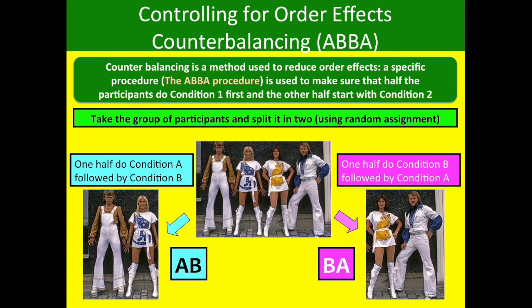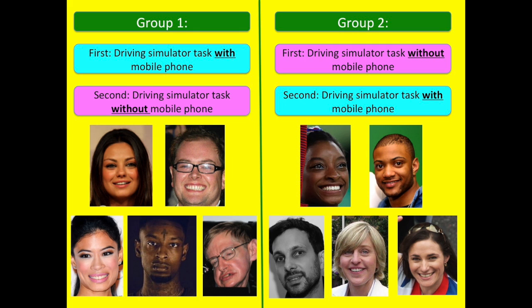The way to control order effects is through counterbalancing, also called the ABBA effect. You split participants in two: half do condition A followed by condition B, and the other half do condition B followed by condition A. In our experiment, group one does the driving simulator task with a mobile phone first, then without; group two does the task without a mobile phone first, then with. This controls the order effects.